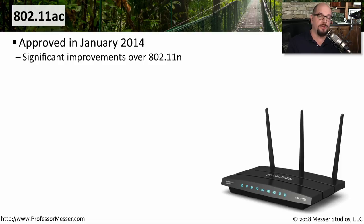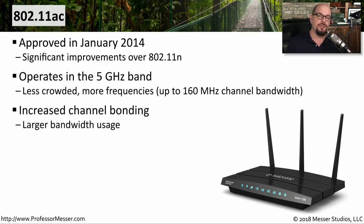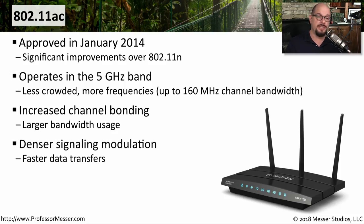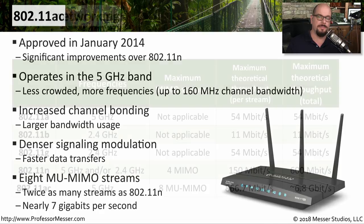One of the most recent versions of 802.11 is 802.11ac, introduced in January of 2014. 802.11ac operates in the 5 gigahertz band exclusively. Some 802.11ac routers communicate in both 5 gigahertz and 2.4 gigahertz, but all 2.4 gigahertz communication uses 802.11n. Because there's no requirement to communicate in the crowded 2.4 gigahertz band, you can use much larger bandwidths — 802.11ac supports up to 160 megahertz channel bandwidths. It can also bond individual channels to create larger bandwidths, and with denser signaling modulation and eight multi-user MIMO streams, you can theoretically support almost 7 gigabits per second of throughput.